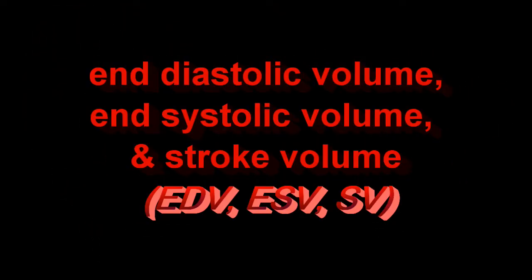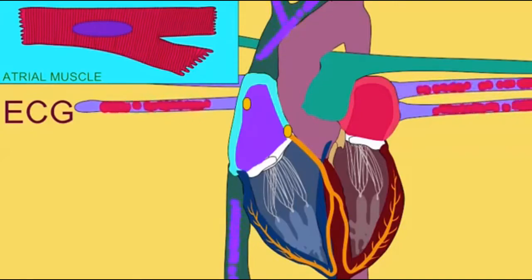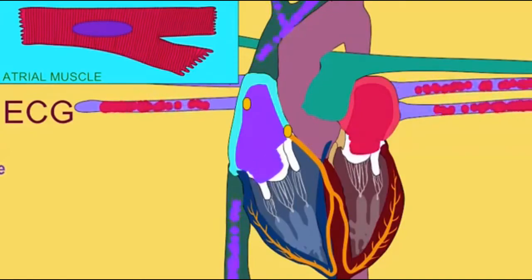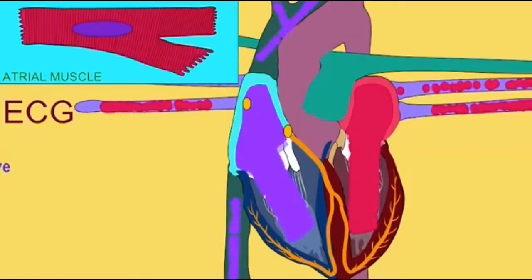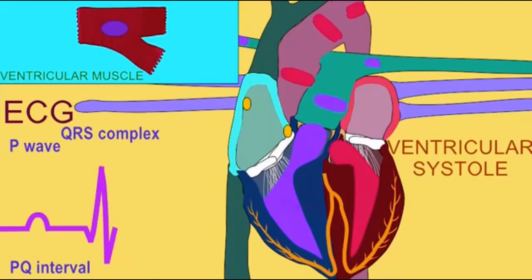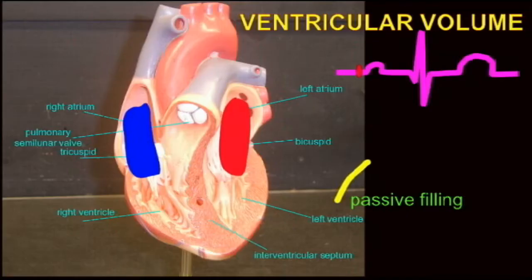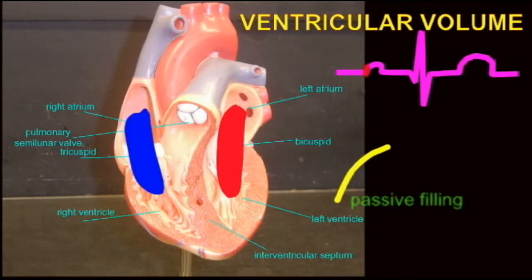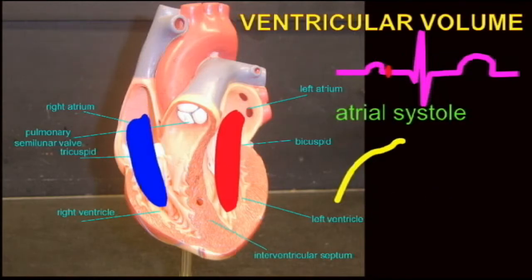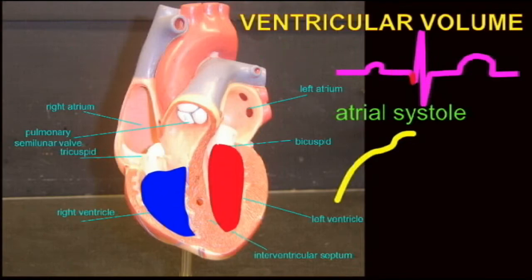Students who study the cardiac cycle undoubtedly face the challenge of trying to link all of the separate phenomena which are occurring together in this cycle. One of the phenomena which changes over the course of the cardiac cycle is ventricular volume. Ventricular volume increases until the ventricles are full, and then the ventricles eject blood and ventricular volume decreases.